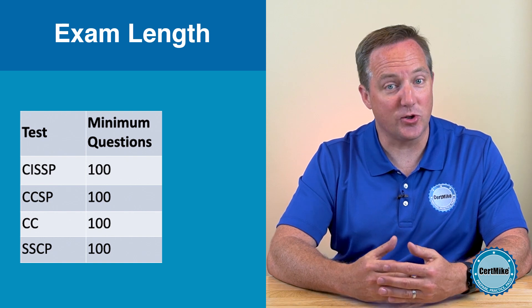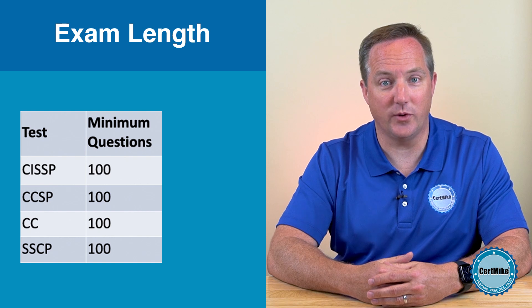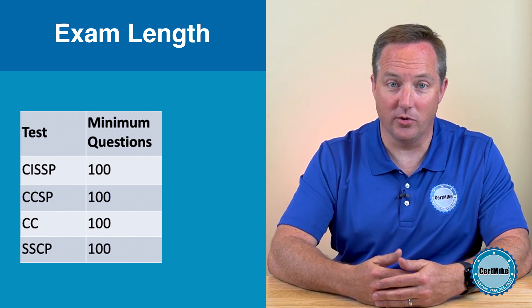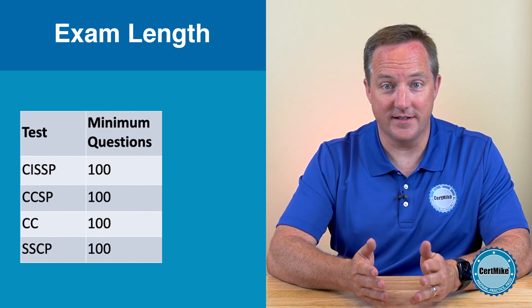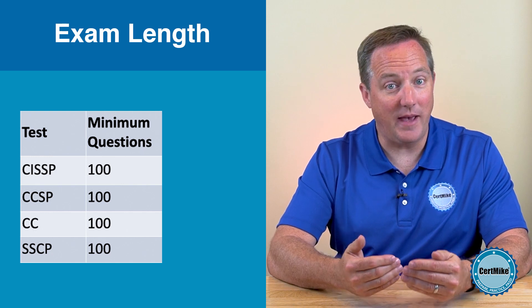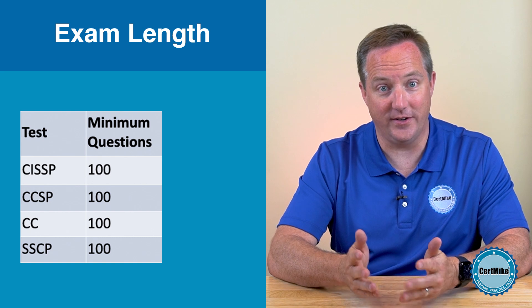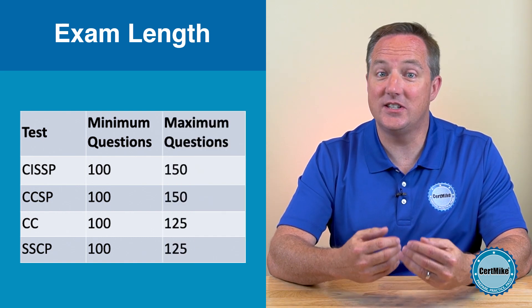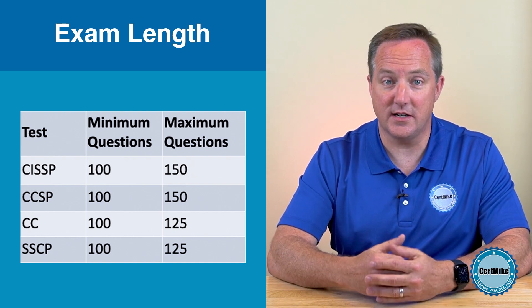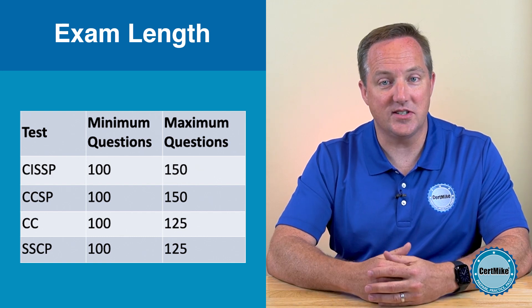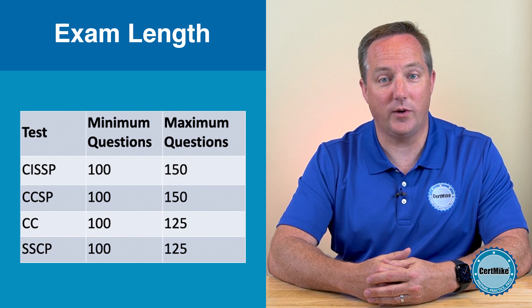The CCSP, SSCP, and Certified in Cybersecurity exams begin using adaptive testing in October 2025. Each of these exams has the same minimum number of questions: 100. That's the earliest point where the exam can end. For CISSP or CCSP, the exam can go as long as 150 questions. For CC or SSCP, the maximum is 125 questions. Don't psych yourself out if your exam goes past question 100 — as long as the algorithm is still asking you questions, you're still alive. It's not sure whether you've passed or failed, so there is still an opportunity to pass. Keep optimistic and focused.